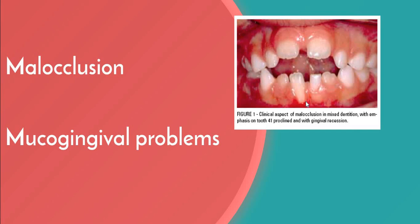The maxillary canine region is also prone to localized gingival recession. Late-erupting canines in a crowded dentition may be displaced buccally and erupt near attached gingiva or mucosa, increasing the risk of insufficient gingival tissue width and recession.